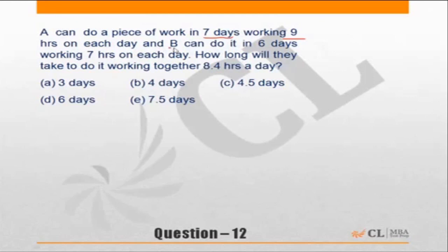B can do the work in 6 days working 7 hours each day. So I can say A can do the piece of work in 63 hours—7 days, 9 hours each day, so that is 63 hours.